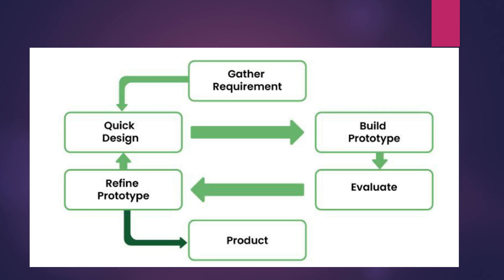This is the basic structure of a Prototype Model. The Prototype Model is one of the most popular software development lifecycle models. This model is used when customers do not basically know the exact project requirements beforehand. In this model, a prototype of the end product is first developed, tested, and refined as per the customer's feedback repeatedly. Then the final acceptable prototype is achieved, which forms a basis for developing the final product.